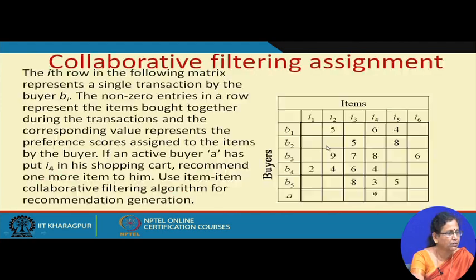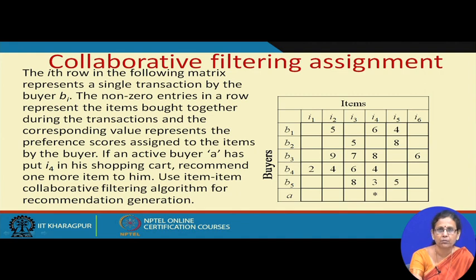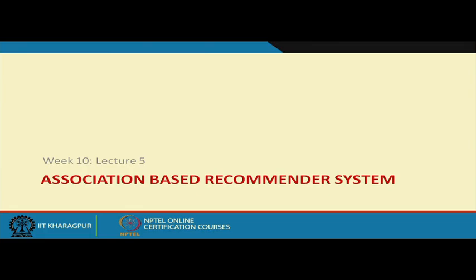There is a problem associated with collaborative filtering called the cold start problem. If a new item comes in and no user has rated it, its similarity with other items is not available, so it will never appear in any recommendation. This situation has to be dealt with separately — possibly using a content-based recommender system to find content-wise similarity with other products. Once you start suggesting it, people will view and purchase it, the item's history will be generated, and then it can have a place in the item-item similarity matrix. With this we finish our lecture, and next lecture we will continue on this recommender system with a new type of approach. Thank you very much.